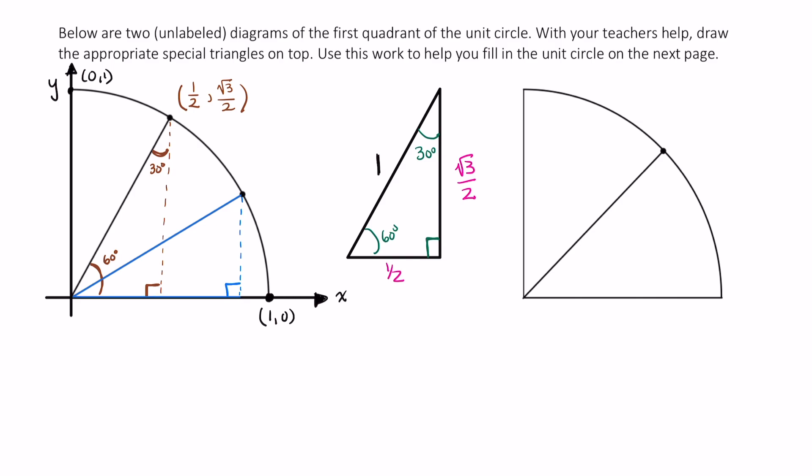Again, this is 90 degrees. This angle here is 30 degrees, and here is our 60-degree angle. Our hypotenuse is 1. And this longer side along the x-axis is opposite of 60 degrees, so I know that's square root of 3 over 2.